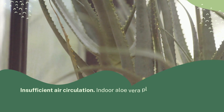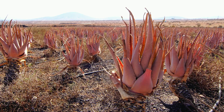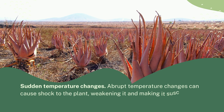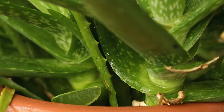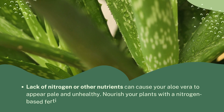Insufficient air circulation: indoor aloe vera plants placed in an environment that has bad air circulation will result in conditions that are a breeding ground for fungi. Sudden temperature changes: abrupt temperature changes can cause shock to the plant, weakening it and making it susceptible to fungal attacks. Make sure that you guard against any sudden temperature changes, especially in winter. Lack of nitrogen or other nutrients can cause your aloe vera to appear pale and unhealthy.